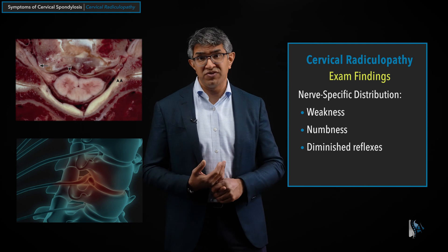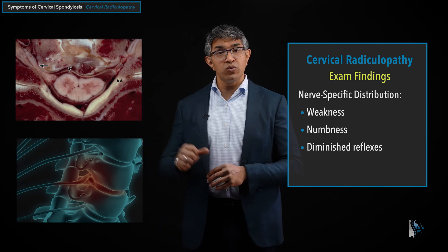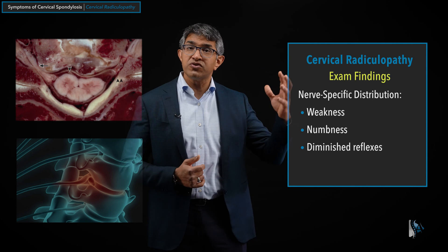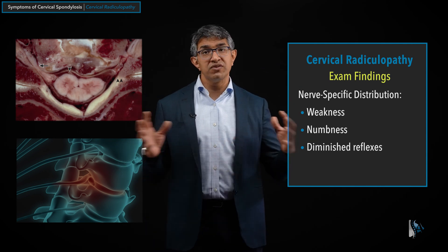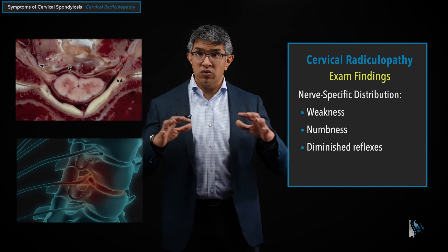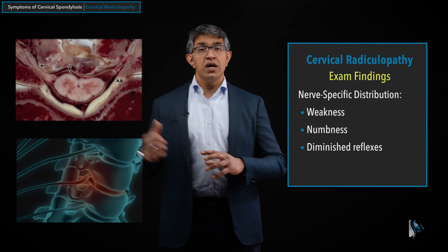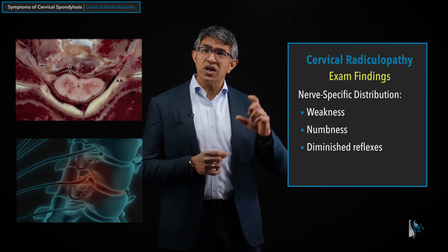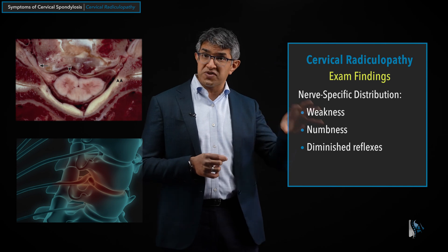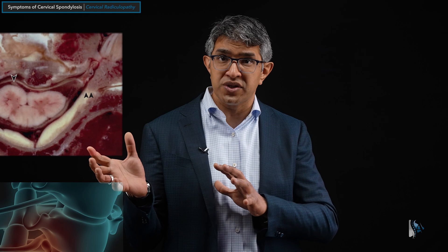Lastly, the clinician will check reflexes. Unlike myelopathy where you look for brisk reflexes, in radiculopathy you're looking for diminished reflexes — either reduced or absent. And it's not just a general reduction; you're looking for specific reduction in specific muscle groups. For C5, is the bicep reflex diminished? For C6, is the brachioradialis diminished? This specific correlation allows the clinician to say that the symptom pattern really does match the MRI findings and is explained by cervical radiculopathy.